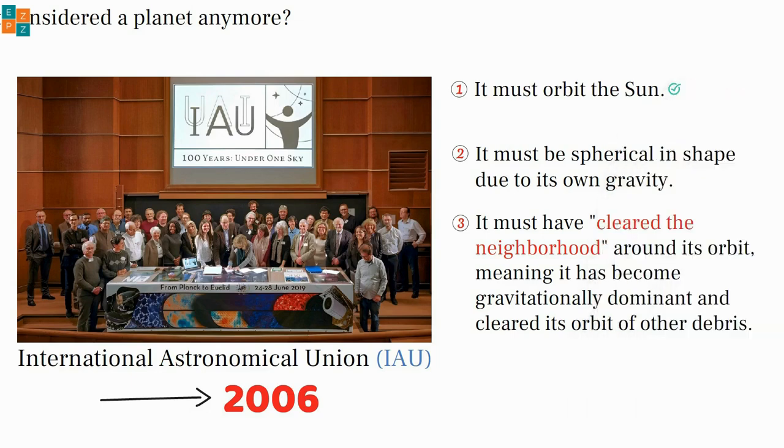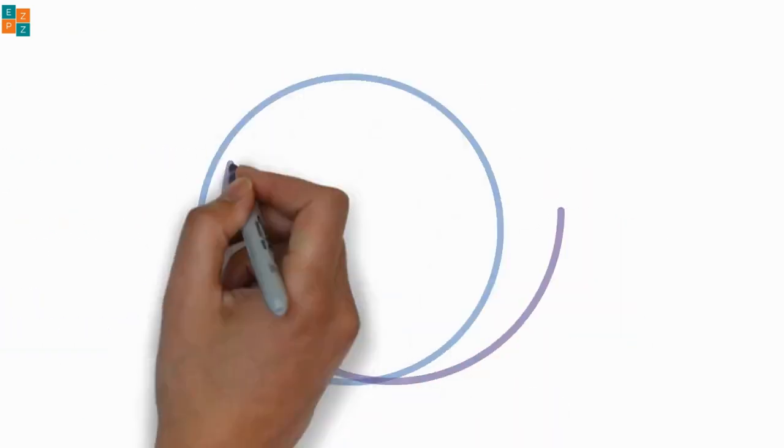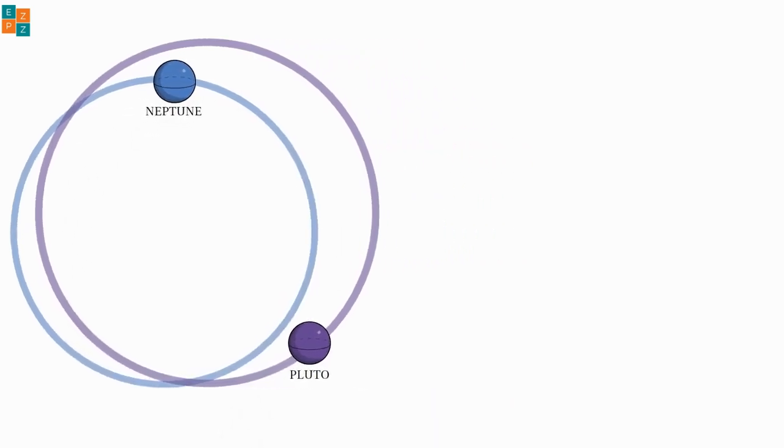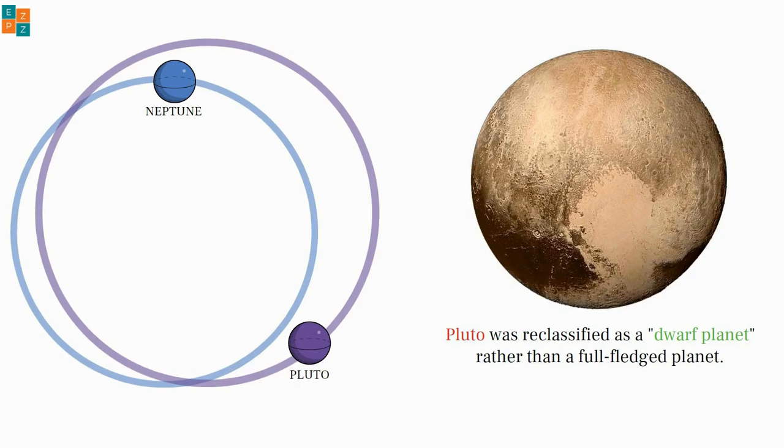Pluto meets the first two criteria as it orbits the Sun and is spherical in shape. However, it fails to meet the third criterion as its orbit overlaps with that of Neptune, and it shares its orbital neighborhood with other objects in the Kuiper Belt. Consequently, Pluto was reclassified as a dwarf planet rather than a full-fledged planet.